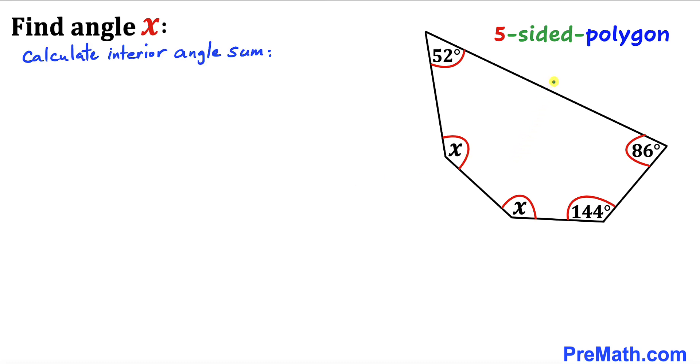We know that we are dealing with a five-sided polygon: side one, side two, side three, side four, and side five.